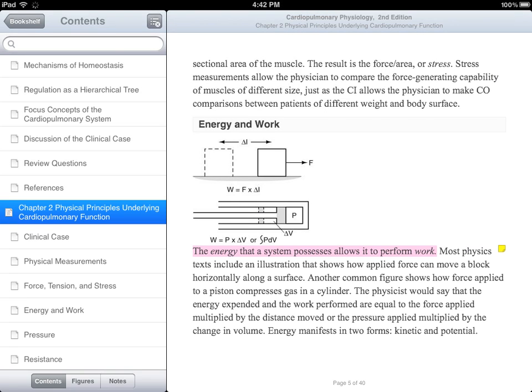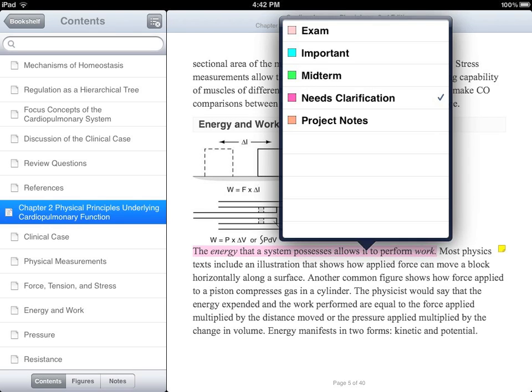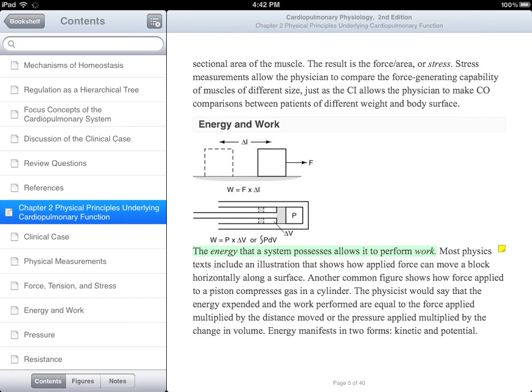If you want to change the color of the highlighted section in your book, tap and hold your finger anywhere on the highlighted area. When you remove your finger, tap on the Highlighter button. Then select the new highlighter color from the list. The highlighted section will immediately be updated.